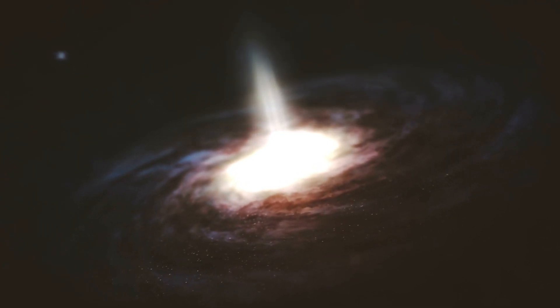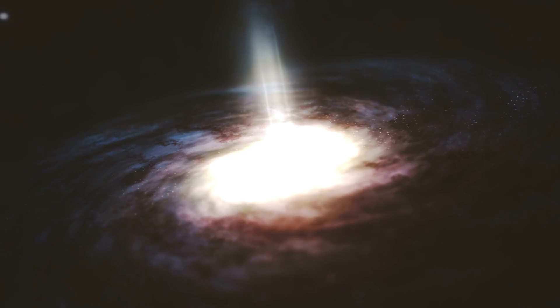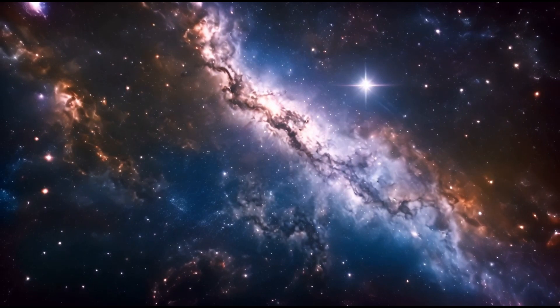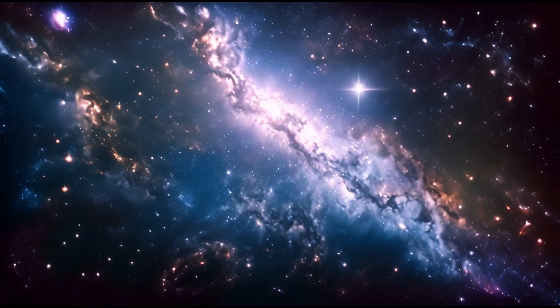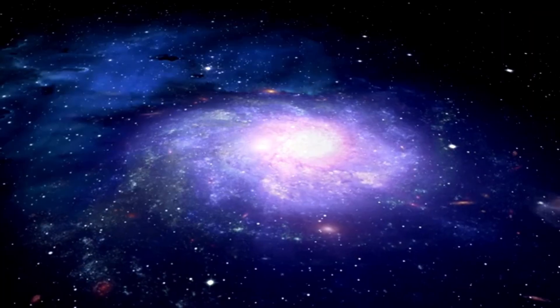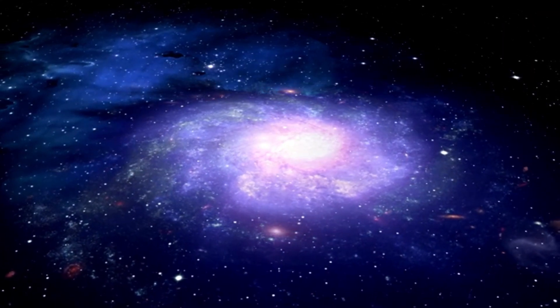Betelgeuse, a star that has fascinated astronomers and the public alike, presents an intriguing puzzle in modern astrophysics. Its designation as a red supergiant situates it in a crucial phase of stellar evolution, one that marks the end of a massive star's life cycle. This stage is characterized by dramatic changes in the star's physical properties and its ultimate fate, which could have profound implications for our understanding of stellar phenomena and cosmic events.